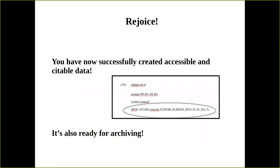That's the end of the method. If you've done this, you've successfully created accessible and citable data that is also ready for archiving. Here's an example citation from a publication, which has one of the words from the recording we just saw, a persistent identifier, and also the unique reference ID that is internal to that document.